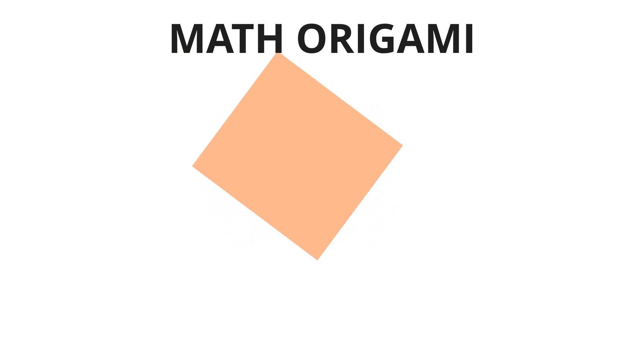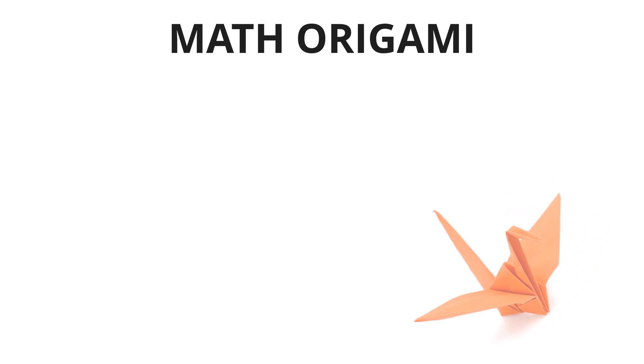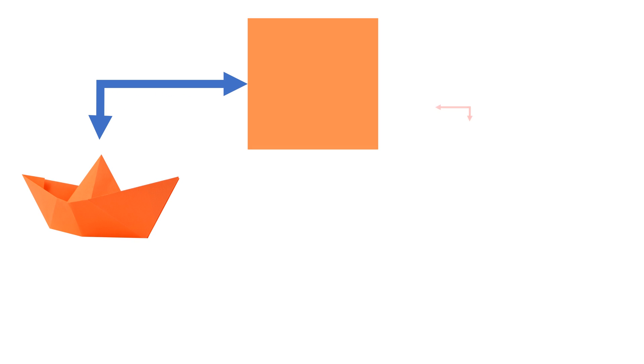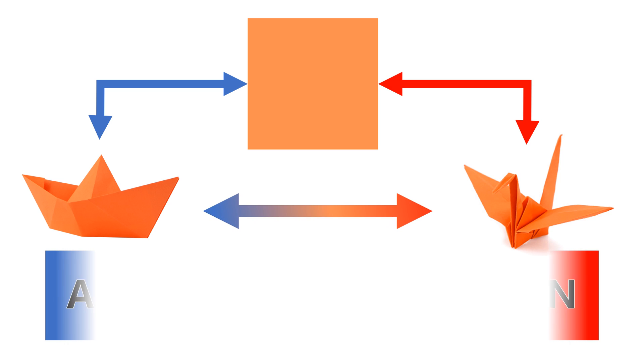Imagine you have a paper origami boat. Obviously you can unfold it to its original square paper, and then with a little bit of skill you can refold that paper into a bird. So you see that the boat and the bird are different representations of one thing. There is an advanced concept in mathematics called analytic continuation that in some sense does the same thing.